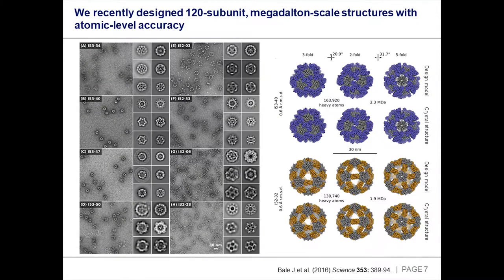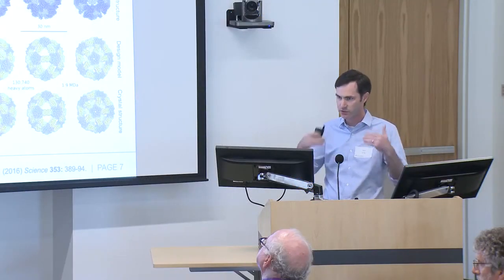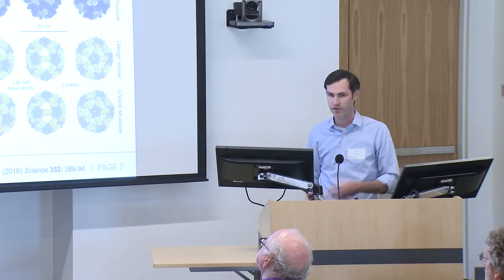These are some materials we've recently designed: 120-subunit assemblies, the size of small viruses. On the left, we're comparing averages from electron micrographs to projections calculated from the computational design model, and you can see they match quite closely. We're showing two crystal structures — we've got lots of crystal structures of these things — and they tend to have an angstrom or less of deviation from what we made up in the computer, over the entire 120-subunit complex. These are two-megadalton structures in which we've predictively positioned every single atom.